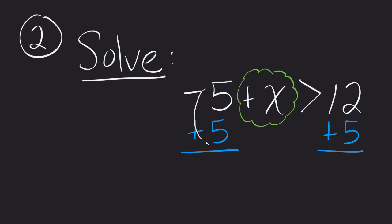So when I do that, negative 5 plus 5 is 0. The x drops down. The greater than comes with it. And 12 plus 5, which is 17. So I now know that any number greater than 17 will make this inequality true.